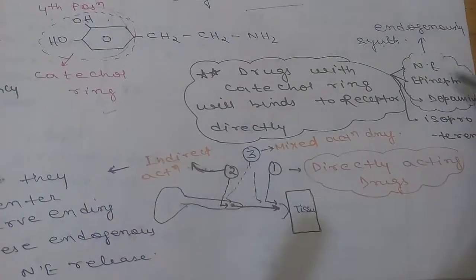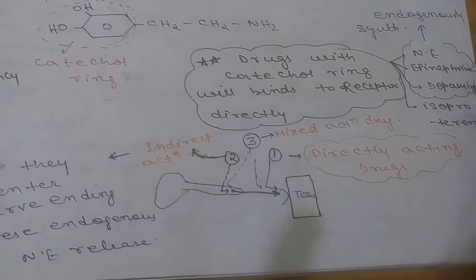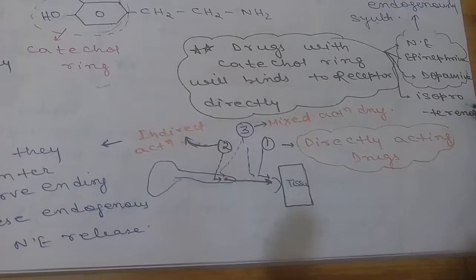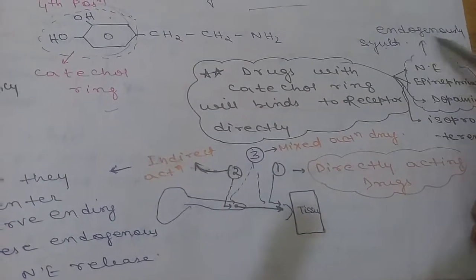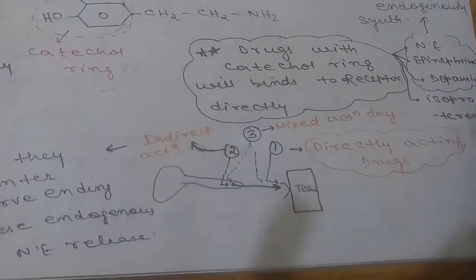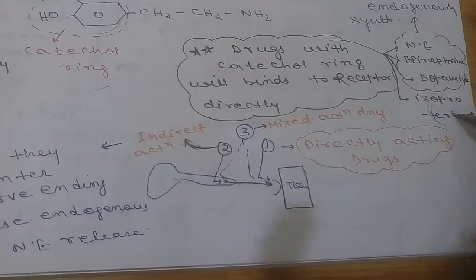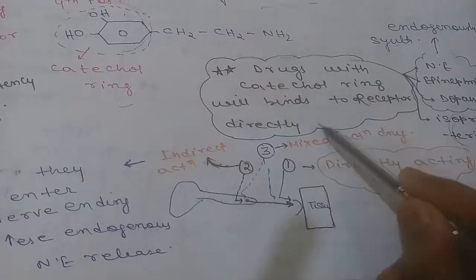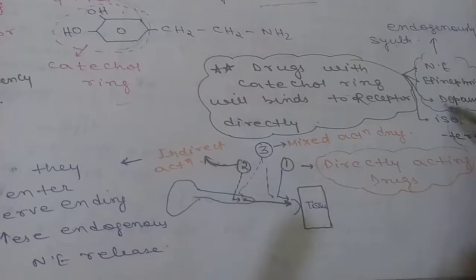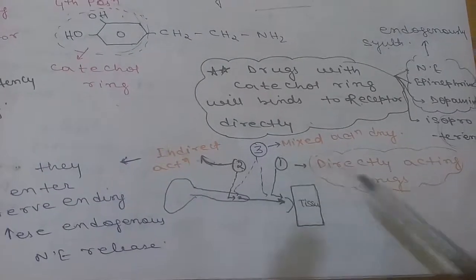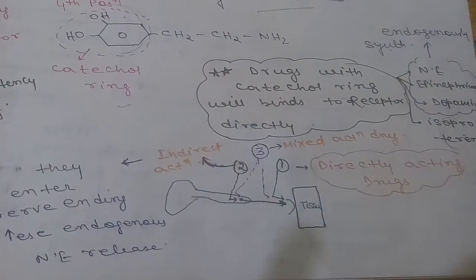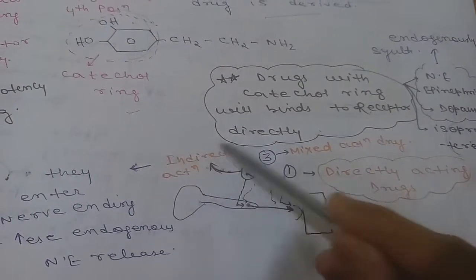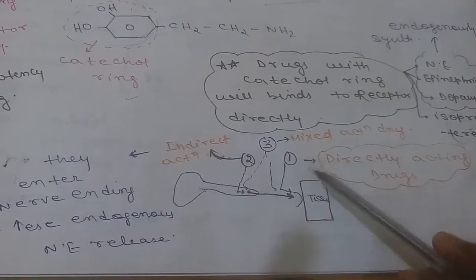Drugs with the catechol ring will bind to the receptor directly. Examples include norepinephrine, epinephrine, dopamine, and isoproterenol — all individually synthesized and given from outside. There are three types of drugs: directly acting, indirect acting, and mixed action.